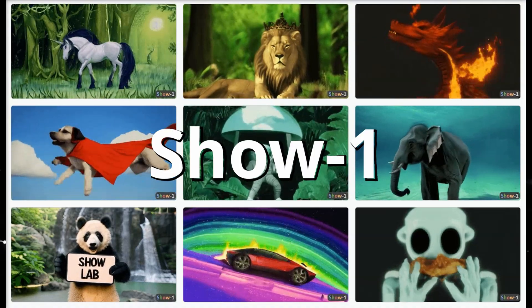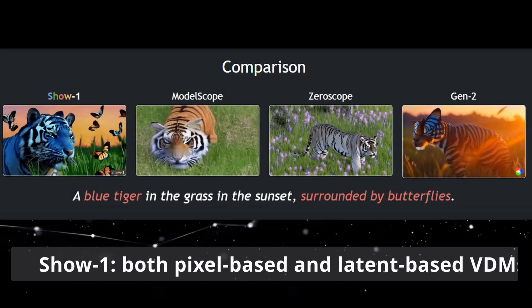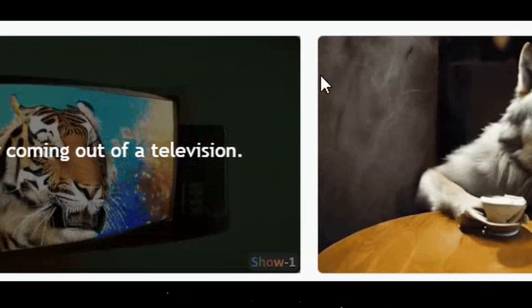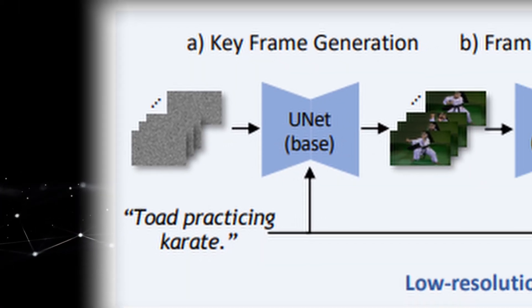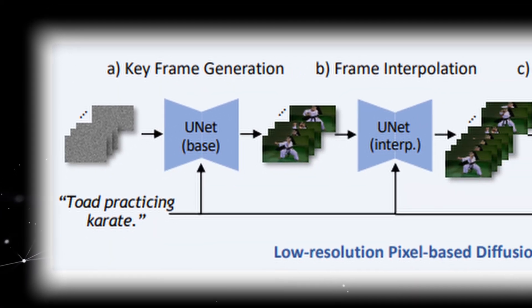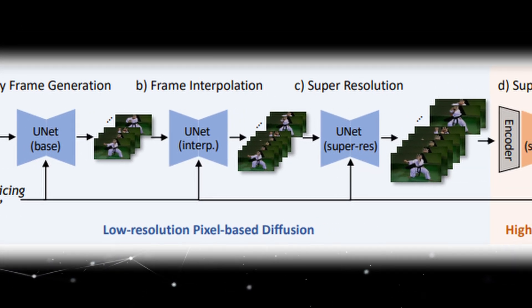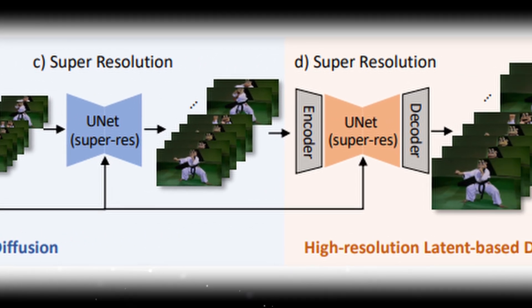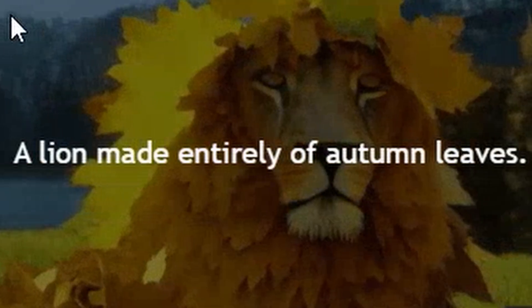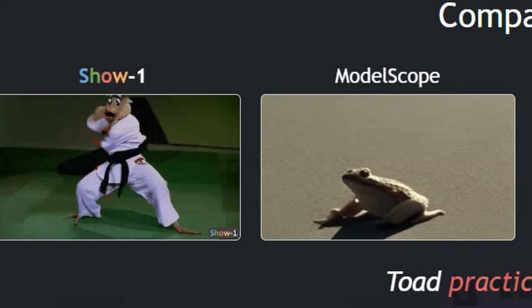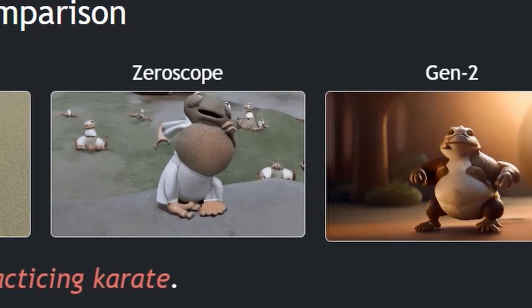And this is exactly where ShowOne steps in to bridge the gap, by ingeniously integrating the strengths of both pixel-based and latent-based VDMs. Impressively, its architecture is founded on a dual-stage approach. The first stage initiates with pixel-based VDMs for generating a low-resolution video with impeccable text-video correlation. Then the second stage utilizes an innovative expert translation mechanism relying on latent-based VDMs to upscale this low-resolution output, achieving a high-resolution result. This combination ensures that ShowOne can produce high-quality videos characterized by precise text-to-video alignments.